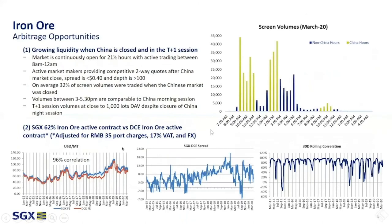Now let's talk about arbitrage specifically. I would like you to look at the breakdown of liquidity on SGX throughout the trading session. We're offering 21 and a half hours of active trading between 8 a.m. and 12 a.m. Singapore time. You can see there are two active green sessions which we call China Hours, coinciding with China open, but we also have very active trading between 3 p.m. to 5:30 p.m. Singapore time, which are non-China hours, and we're still seeing quite a lot of activity in these trading hours.